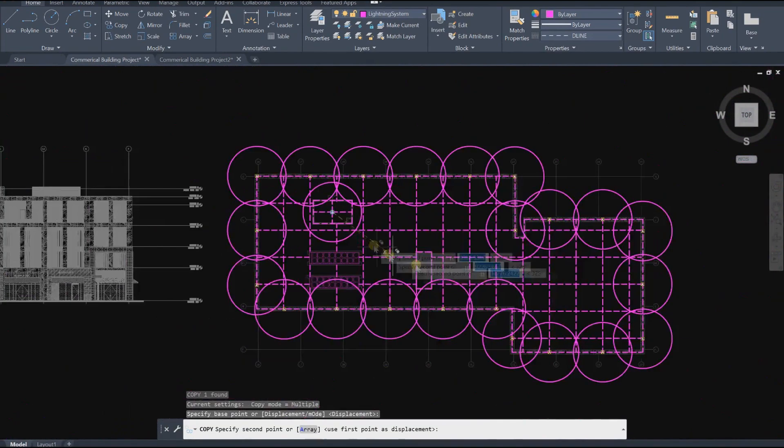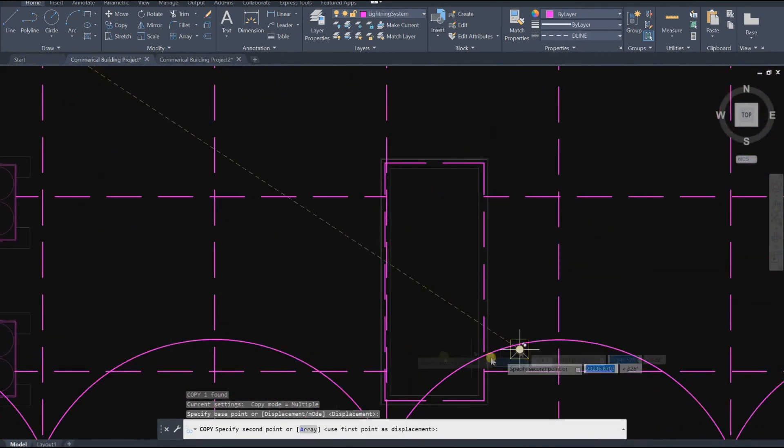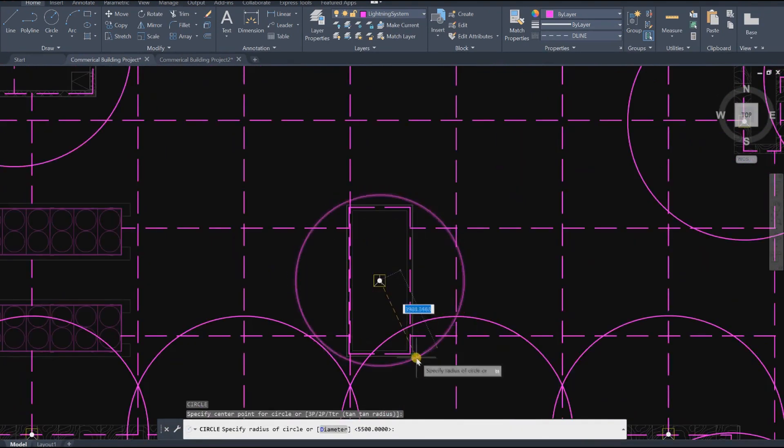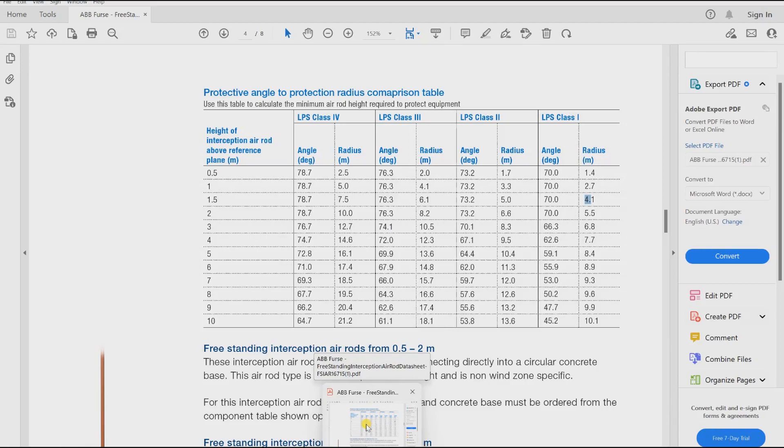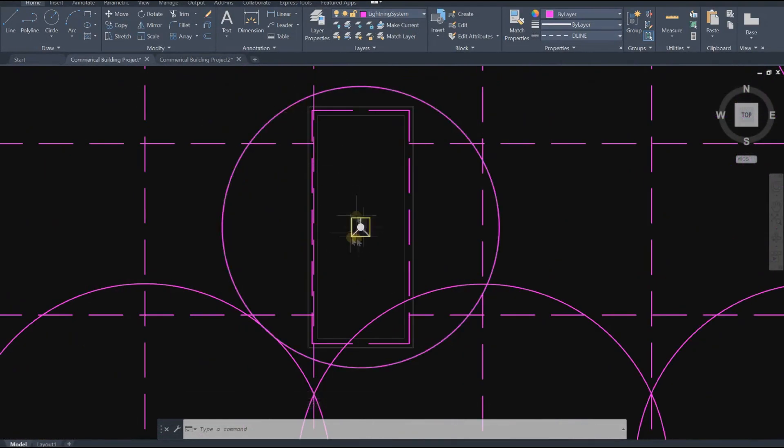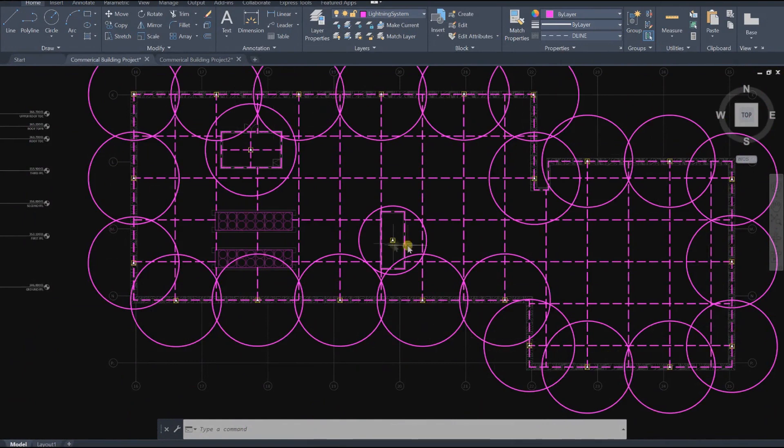We will start designing our electrical system or the lightning protection system using the AutoCAD program, in which we are going to add the mesh grids, the air termination rods, and accessories required in our system.